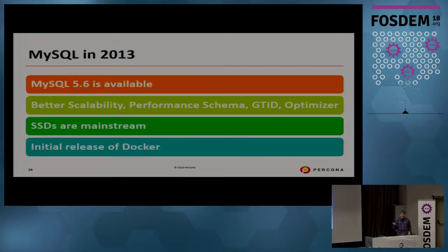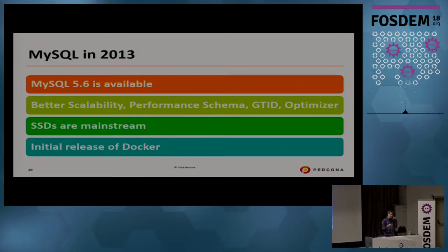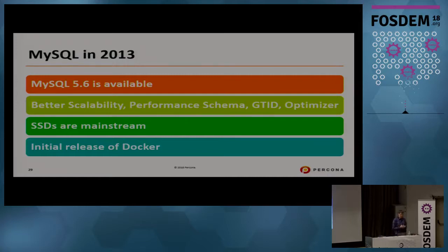In 2013, MySQL 5.6 was released with a focus on better scalability, Performance Schema improvements, GTIDs to make replication at least somewhat easier to manage, and many optimizer improvements. For example, the subqueries introduced in MySQL 4.1 couldn't really execute in reasonable time — in MySQL 5.6 a lot of those subquery optimizations were finally added. Also in 2013, Docker had its initial release.